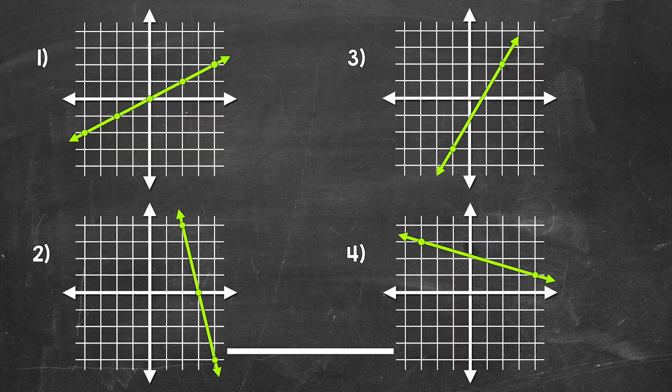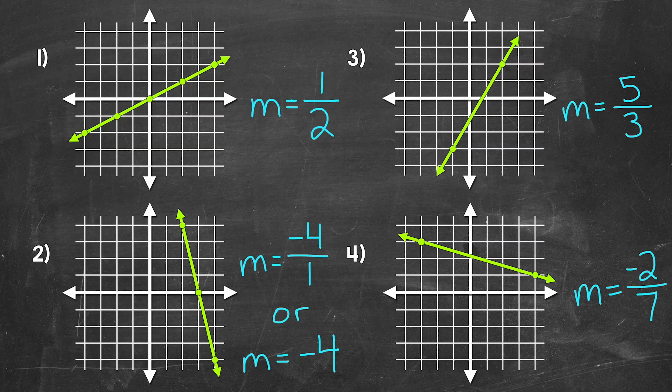Okay, so that was two minutes — let's go over the answers. For number one, the slope is one half: the rise is one and the run is two. For number two, the slope is negative four over one, or we can write this as just negative four: the rise is negative four and the run is one. Moving on to number three, the slope is five thirds: the rise is five and the run is three. And lastly for number four, the slope is negative two sevenths: the rise is negative two and the run is seven.